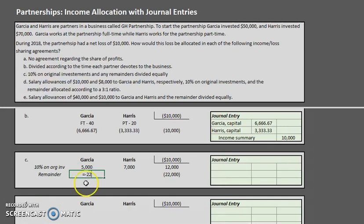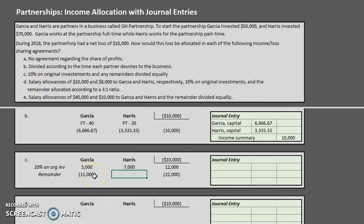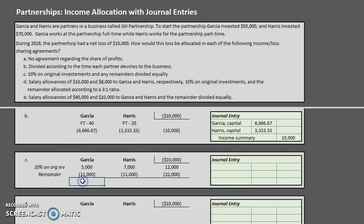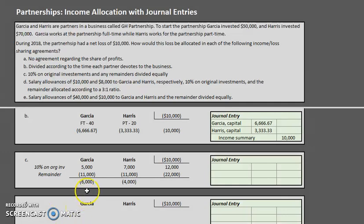According to scenario C, this negative $22,000 remainder is allocated equally. With two partners, divide by two: Garcia absorbs $11,000 and Harris absorbs $11,000 of that remainder. Now combining the steps: Garcia has $5,000 minus $11,000, so Garcia absorbs $6,000 of the loss. Harris has $7,000 minus $11,000, so Harris absorbs $4,000 of the loss.